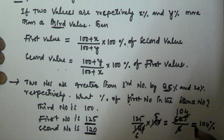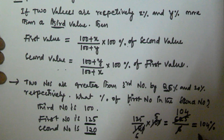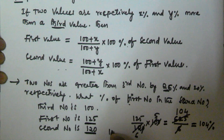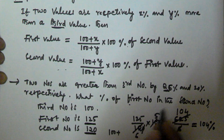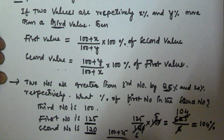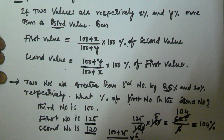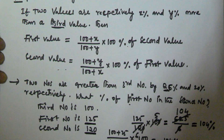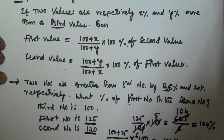This will also be 104 percentage. Otherwise, directly substituting in the formula: the first number is (100 plus x percent, that is 25) by (100 plus y percent, that is 20) into 100, which gives 104 percentage. Thank you very much for watching this video, please subscribe to my channel.